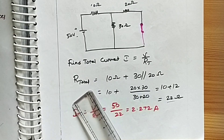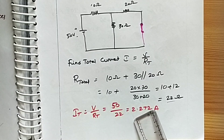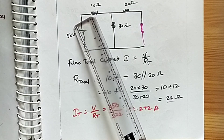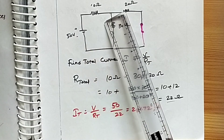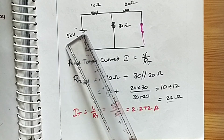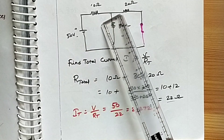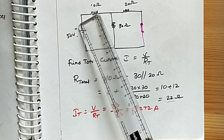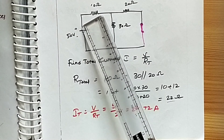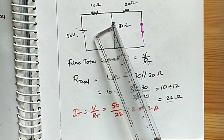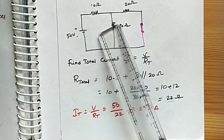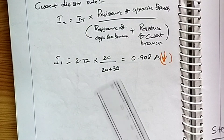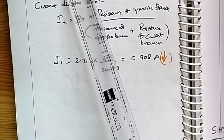From that, total current I = V / R_total = 50 / 22 = 2.72 amps. This is due to the 50-volt source only. Now using the current division rule: what is the current through the 30-ohm resistor due to the 50-volt source only?